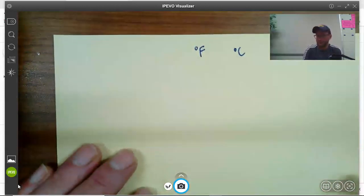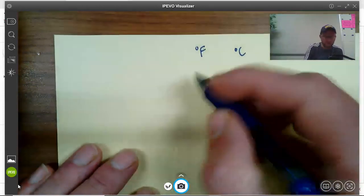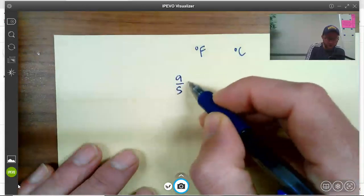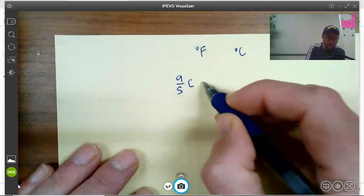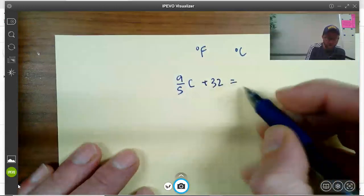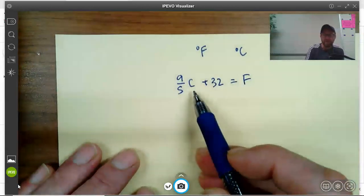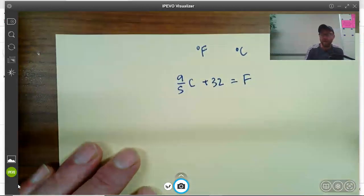There's a formula for converting between the two. It goes like this: nine-fifths times Celsius plus 32 equals Fahrenheit. So I just take the Celsius temperature, multiply by nine-fifths, and add 32.